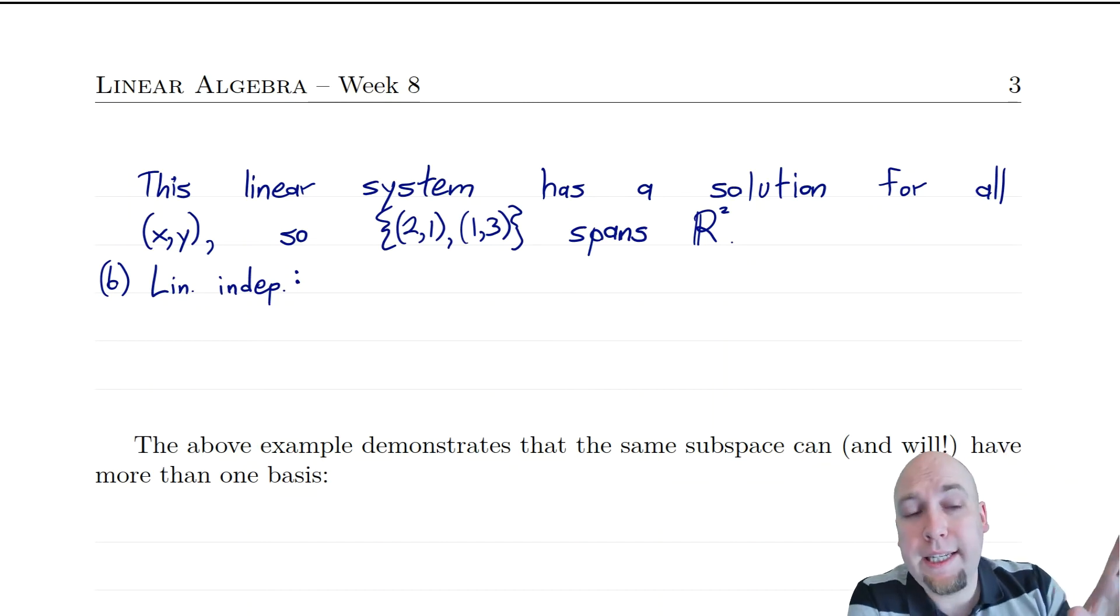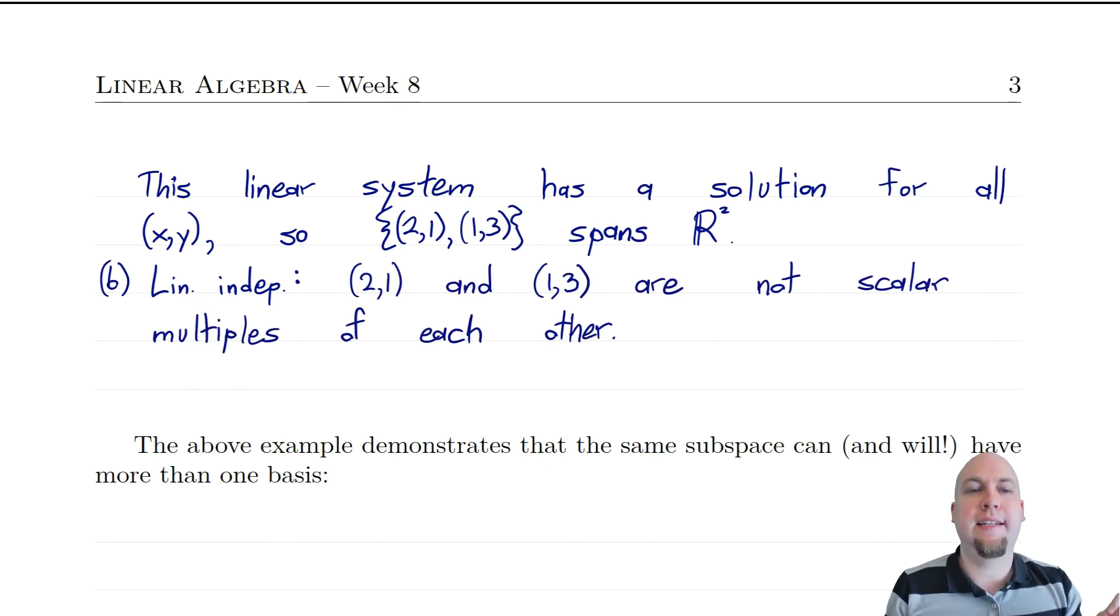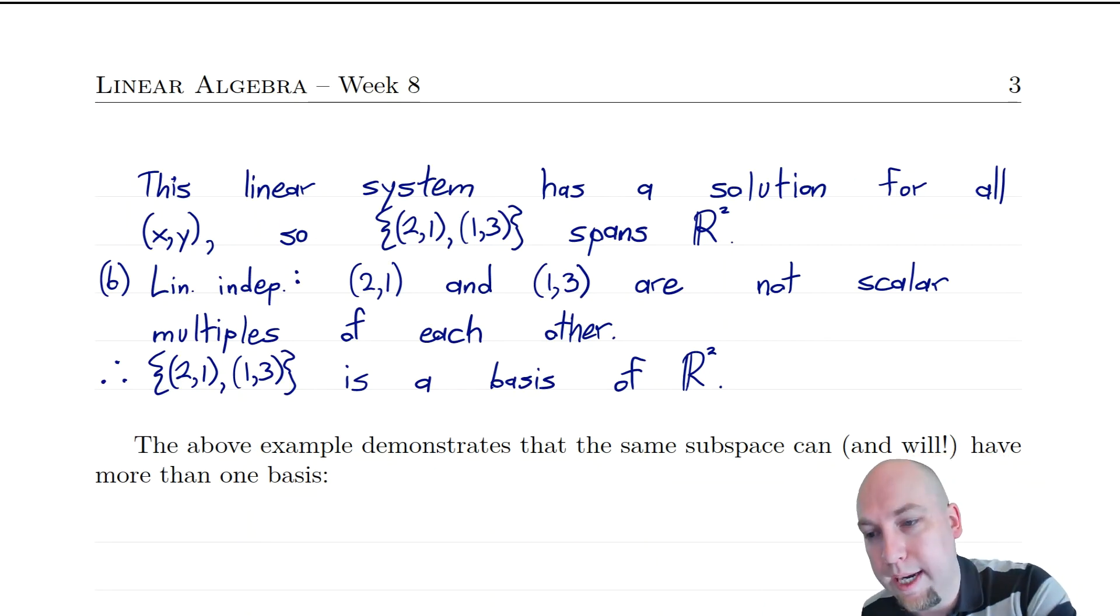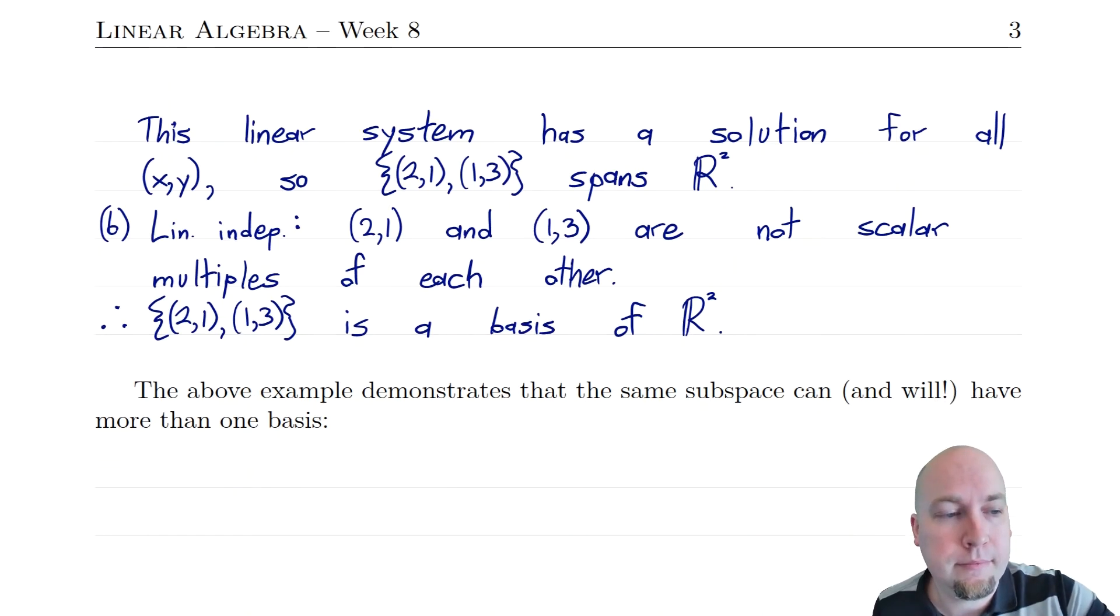Fortunately, we've got a little bit of an out here because this set only contains two vectors. And remember, we learned last week that a set consisting of just two vectors, it's linearly independent if and only if those vectors are not scalar multiples of each other. And well, that's something you can just eyeball. (2,1) and (1,3), no, those don't point in the same direction. They're not scalar multiples of each other. So that set is linearly independent. So I'm done. That's all there is to it. It's got those two properties. So great, I know it's a basis.